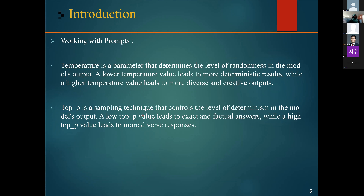When working with prompts, we interact with the language model through an API or directly, and we can configure a few parameters to get different results. The first parameter we will discuss is temperature, which is used to control the level of randomness in the output.